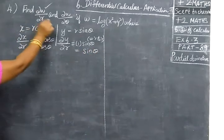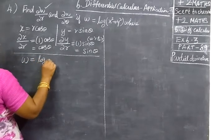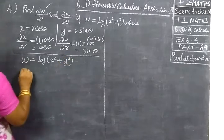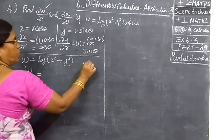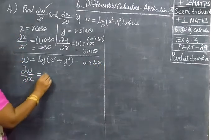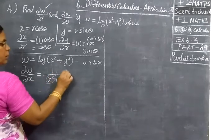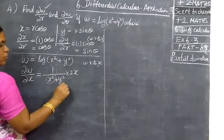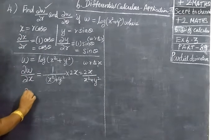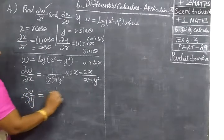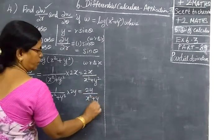Now, w is equal to log of (x² + y²). First we find ∂w/∂x. Partially differentiating with respect to x: by the log rule, 1 over (x² + y²), times the derivative of the inner function with respect to x, which is 2x. So ∂w/∂x = 2x/(x² + y²). Next, ∂w/∂y = 2y/(x² + y²).